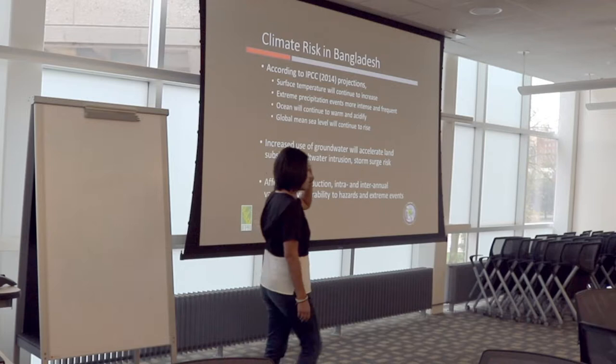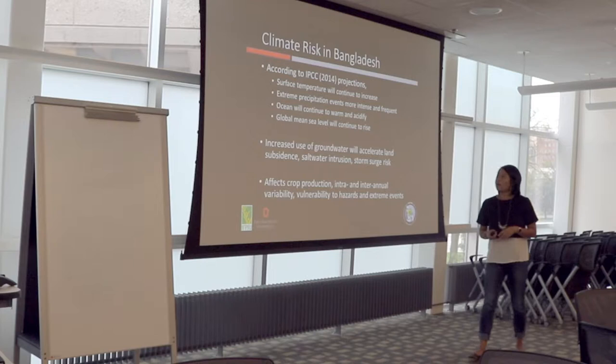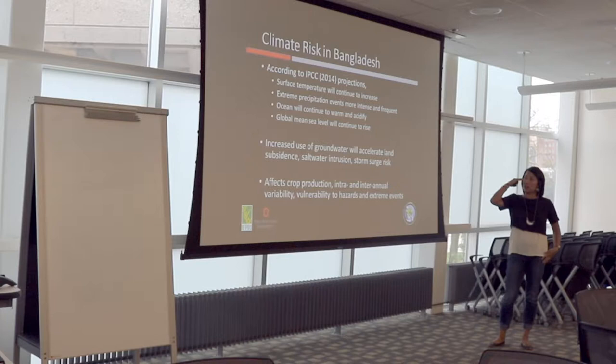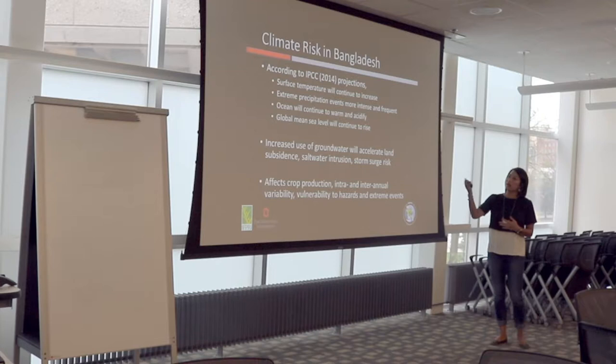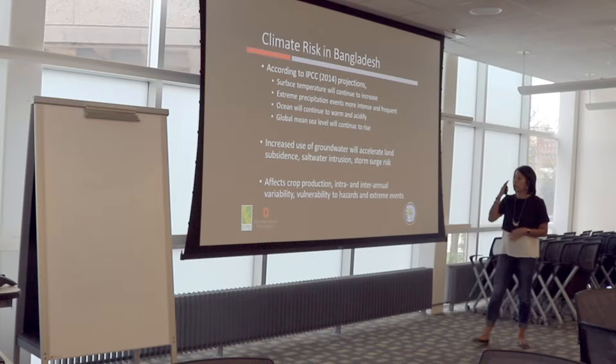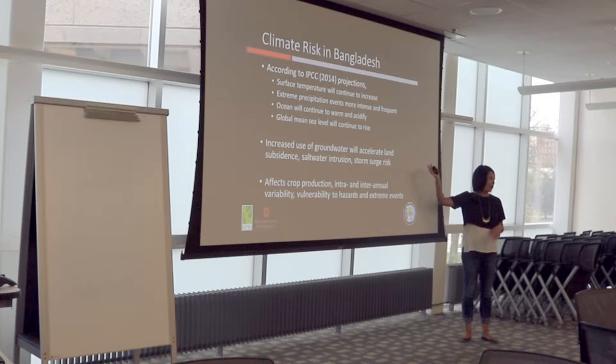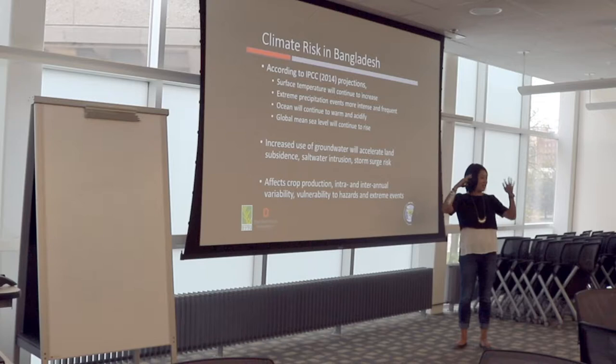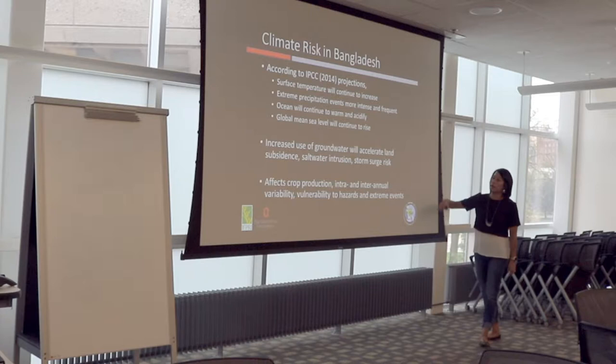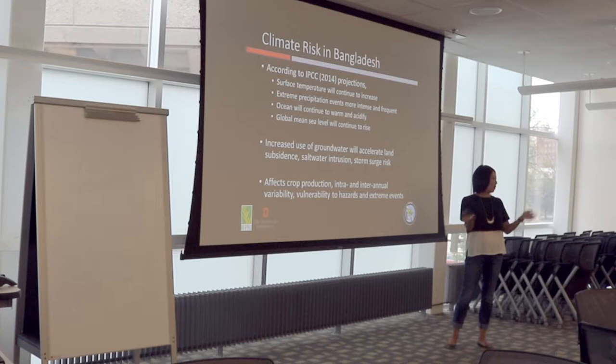According to IPCC projections, surface temperature is going to increase, which may be good or bad for agriculture depending on context. Extreme precipitation events are going to become more intense and more frequent — we're going to get more droughts and more floods. The ocean will continue to warm and sea levels will continue to rise. One thing I've learned from our physical science colleagues is that increased use of groundwater, which is happening widely in Bangladesh, actually accelerates land subsidence — causing the land to sink, which then accelerates the impact of sea level rise and saltwater intrusion.